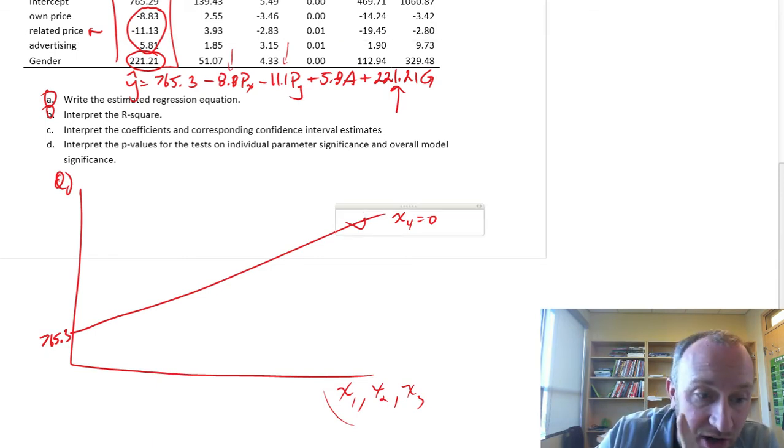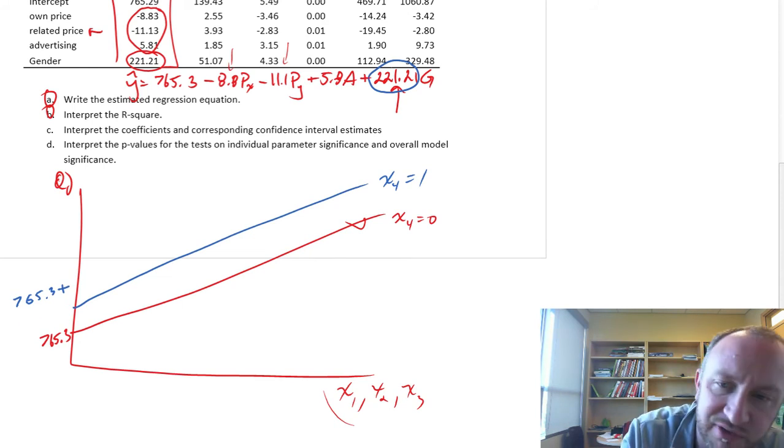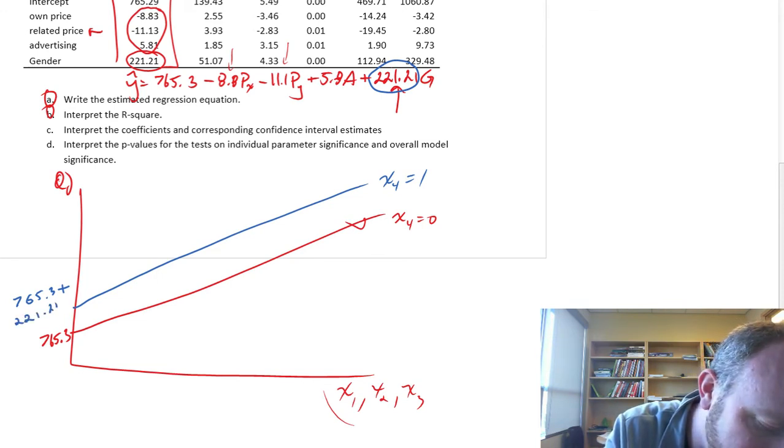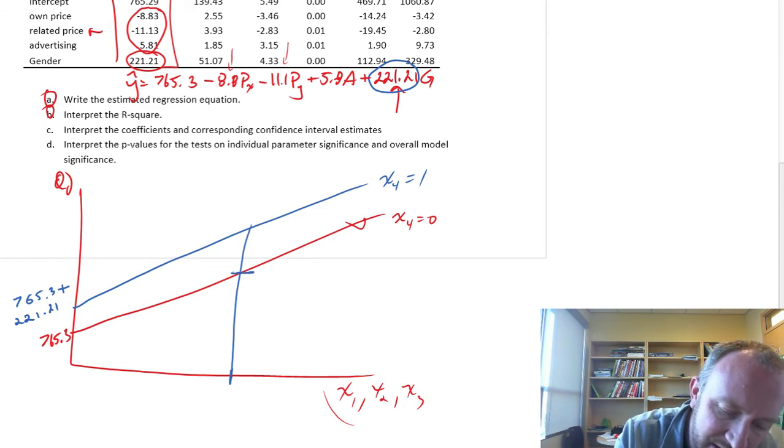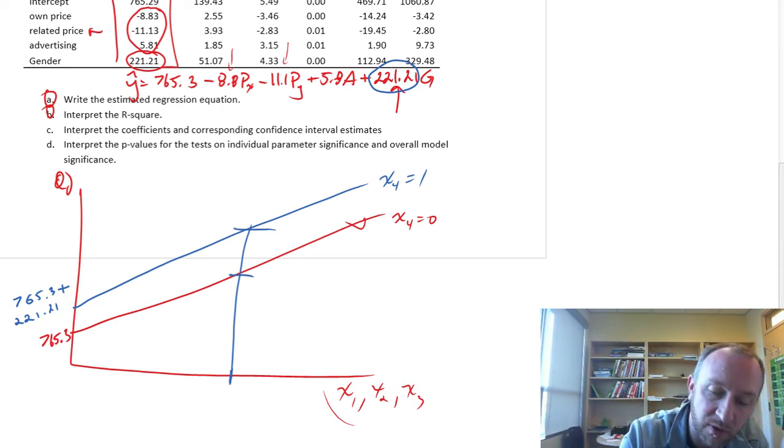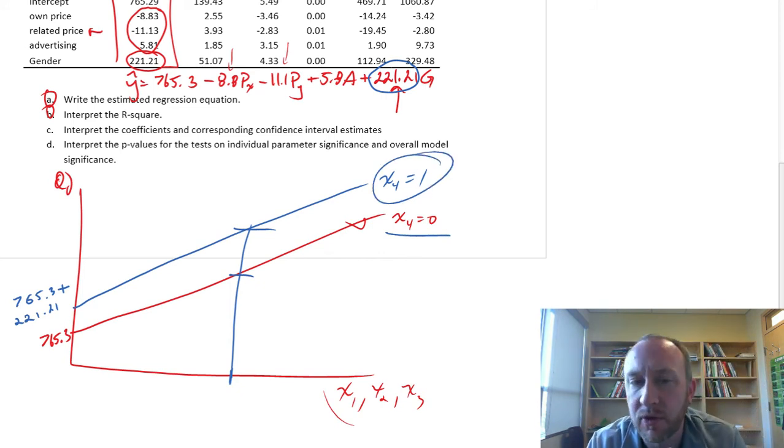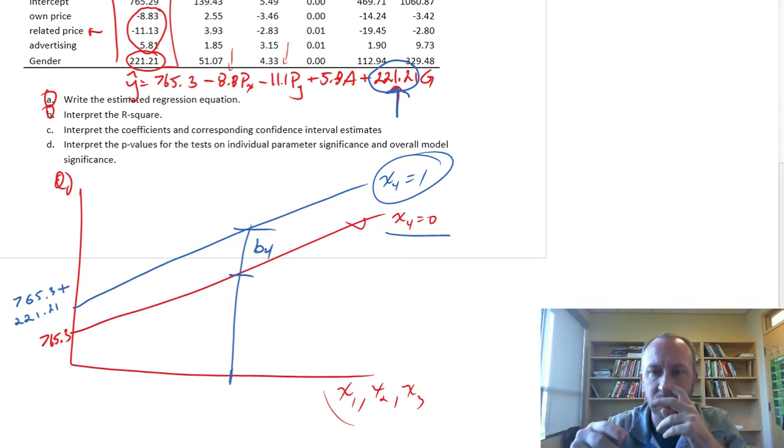This has a y-intercept 765.3 and all of these partial slopes. Now with that dummy turned on, so it takes on a value of 1, we have just a parallel line here, and this is going to have a y-intercept of 765.3 plus 221.2. Now you can give me values for all of the other independent variables, and I can estimate two values: one that corresponds to the average quantity demanded for men and the other for women. This vertical difference is that B4, that coefficient on the dummy variable—the average difference between these two levels.